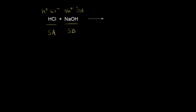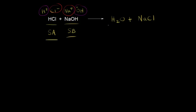Let's think about the products for this reaction. One product would be H+ and OH−. If you put H+ and OH− together, you form H2O. So water is one of our products, and the other product would be what's left over — we have Na+ and Cl−, which gives us NaCl, sodium chloride. This is an example of an acid-base neutralization reaction where an acid reacts with a base to give you water and a salt.